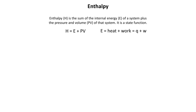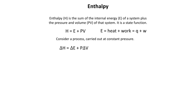A good way to understand what enthalpy is, is to consider a process carried out at constant pressure. This means we're going from an initial state to a final state. Our equation for enthalpy now becomes delta H equals delta E plus P delta V. Since we're at constant pressure, only volume is changing.